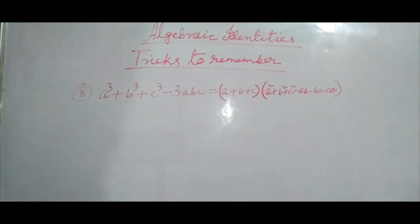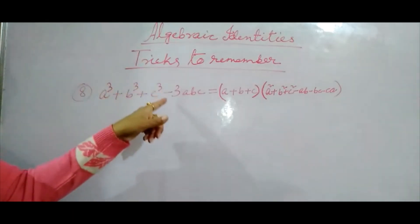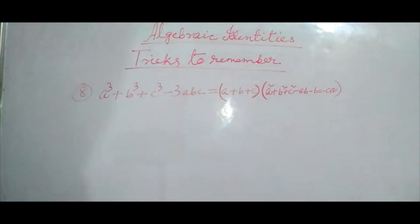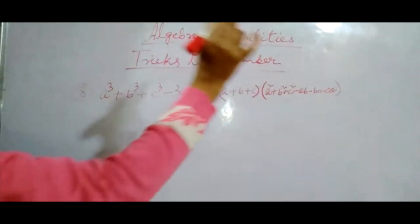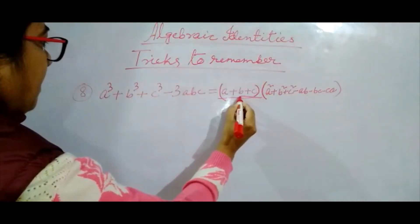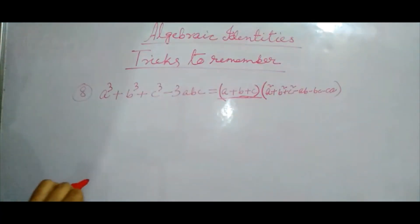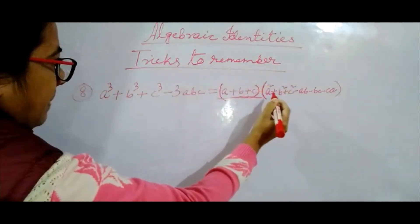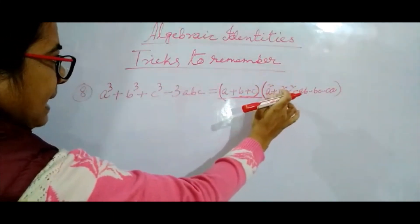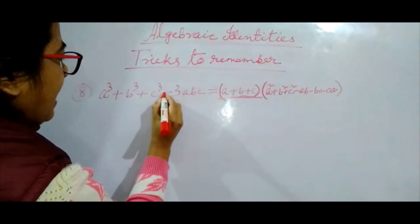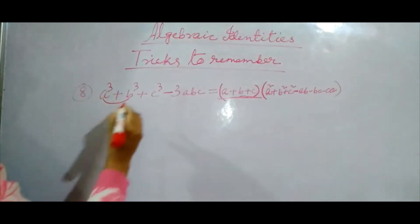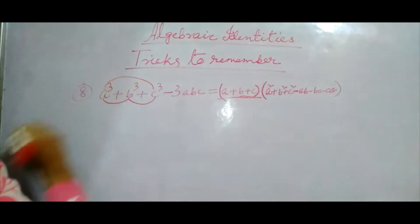Coming to the last identity — very very important: A cube plus B cube plus C cube minus 3ABC. This is equal to A plus B plus C into A square plus B square plus C square minus AB minus BC minus CA. How to remember: first part is A plus B plus C. Then after that in bracket it will be A square, because A square into A is A cube. Then plus B square plus C square. Then as this sign is minus, it is also minus: then minus AB, minus BC, minus CA.